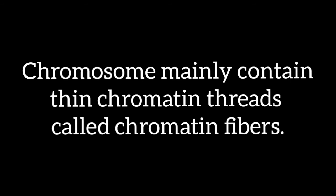Chromosomes are mainly composed of thin chromatin threads, what we call chromatin fibers. These fibers undergo coiling and super-coiling during prophase, and therefore chromosomes become thicker and smaller. As a result, chromosomes become readily observable under a light microscope.